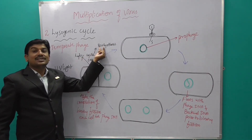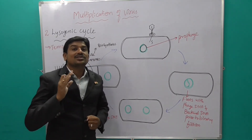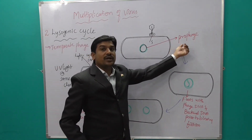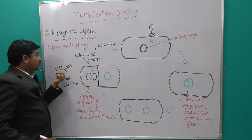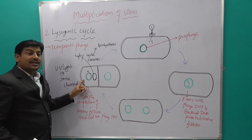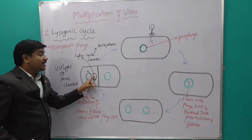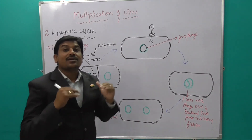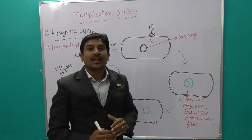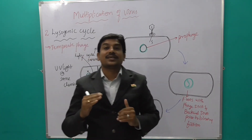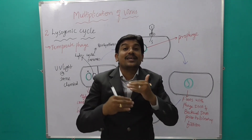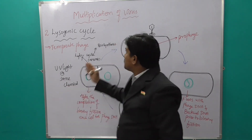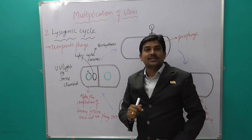The lysogenic cycle looks similar to the transduction process. Key exam points: prophage formation is very important, and when exposed to UV light or chemicals, the bacterial DNA degenerates and only the phage DNA remains, which then enters biosynthesis in the lytic cycle. This lysogenic cycle resembles transduction. Finally, viruses that multiply within living organisms through this process are called obligate intracellular parasites.